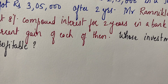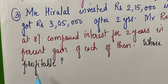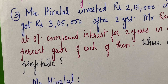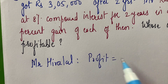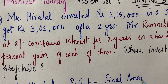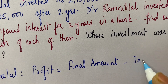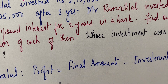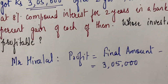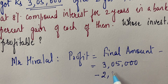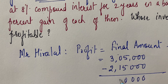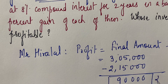So what we do is, first of all we will go for the profit earned by Mr. Hiralal. Profit is equal to final amount minus the investment. Final amount he received was 3,05,000 minus his investment of 2,15,000. So his profit is 90,000 rupees.